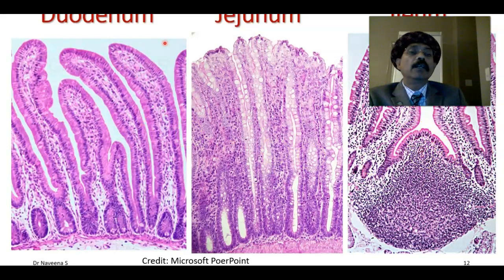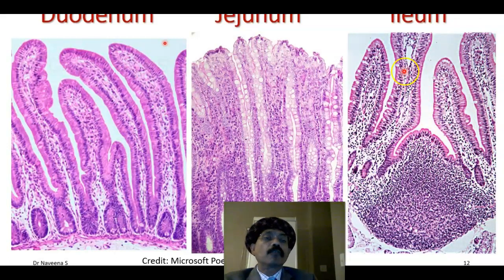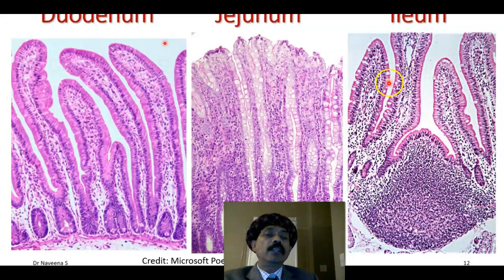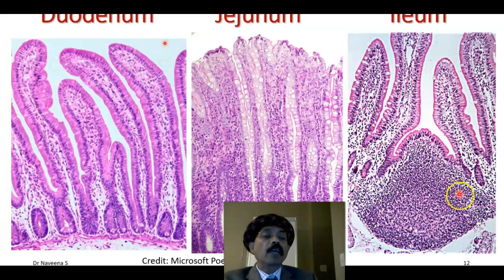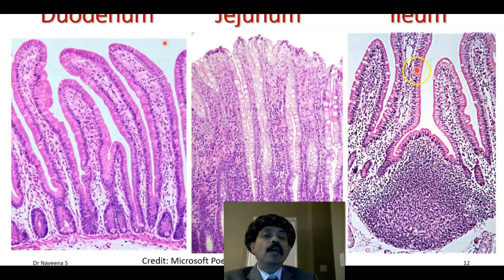And here in the ileum, the shortest of all villi, and there are many goblet cells — these light-stained areas are the goblet cells, also present in the jejunum, but by convention they should be more in the ileum. This is the lymphatic nodule present in the lamina propria, extending up to the submucosa, with a germinal center — the light area here. The lining epithelium is simple columnar epithelium, and the villi contain the lamina propria.